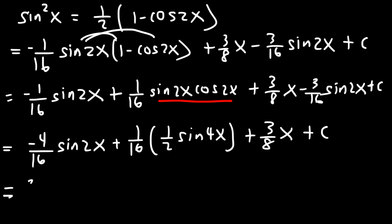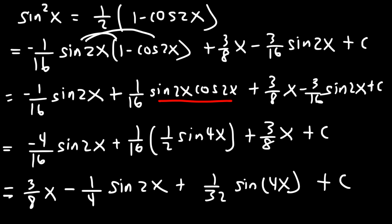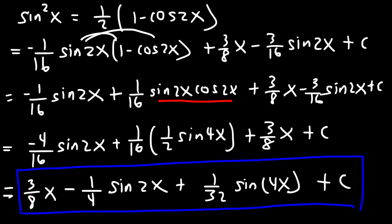Now let's put this in order. We have 3 over 8 x, then 4 over 16 reduces to negative 1 over 4 sine 2x, and then 1 over 16 times 1 over 2 is 1 over 32 sine 4x, plus c. So this is the integral of sine to the fourth x written in simplified form.